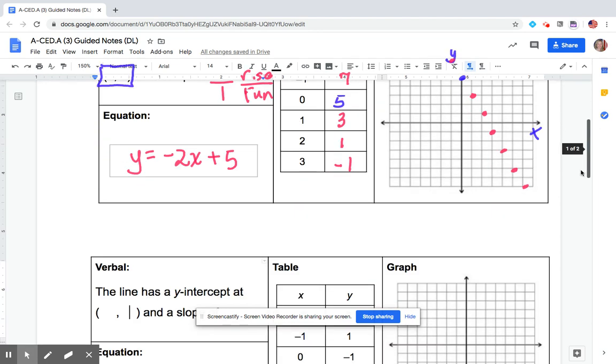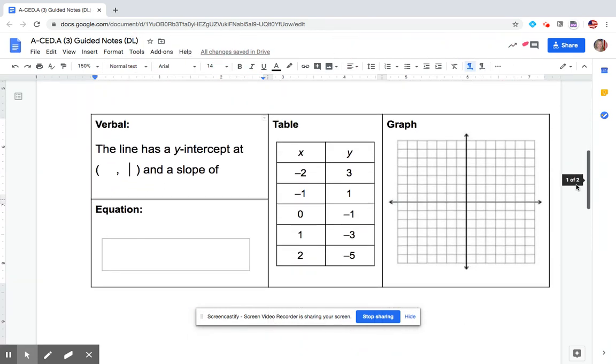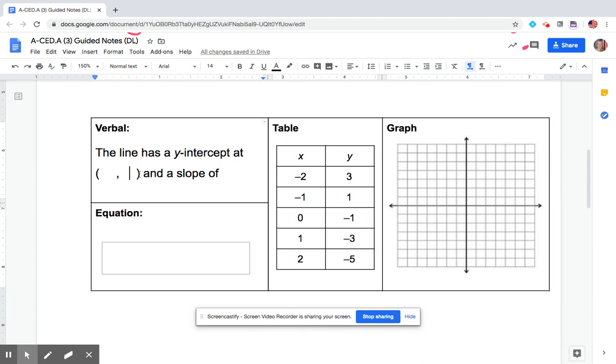So let's get another example here. The graph is not given, the verbal description is not given, but the table is given. So we can take the information from the table. I always like to look for my initial value, my y-intercept, and I like to graph that first - zero comma -1. And in my slope intercept form I know my y-intercept is -1.